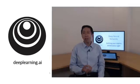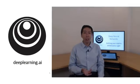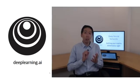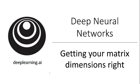When implementing a deep neural network, one of the debugging tools I often use to check the correctness of my code is to pull a piece of paper and just work through the dimensions and matrices I'm working with. Let me show you how to do that, since I hope this will make it easier for you to implement your deep nets as well.